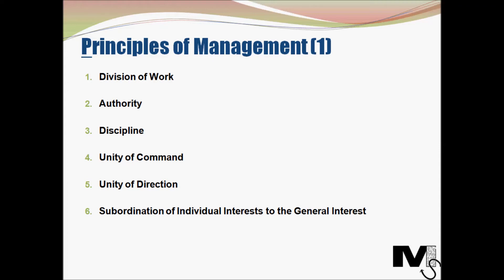Unity of command: employees should only have one direct supervisor to avoid conflicting lines of command. Having various different supervisors can create a very chaotic situation, and it is important for the organization to be structured in a way that this is avoided. Unity of direction: teams with the same objectives should be working under the direction of one manager using one plan, which will automatically ensure that action is properly coordinated. The next principle is subordination of individual interests to the general interest of the organization — the interests of any one employee should not be allowed to become more important than the interests of the group.